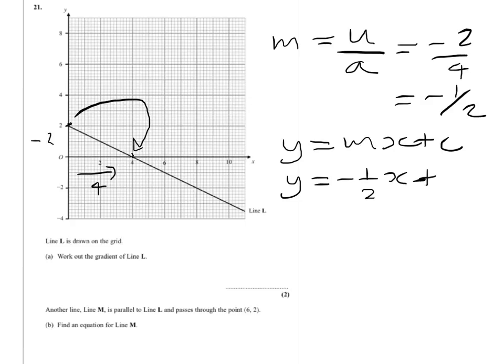Now we've been given a point, which is the point (6, 2). And the point (6, 2) can now be substituted into this to help us find c. So 2 will equal minus 1 half times, well actually we'll get rid of that x because we know x is equal to 6. So 2 will equal minus 1 half times 6 plus c.